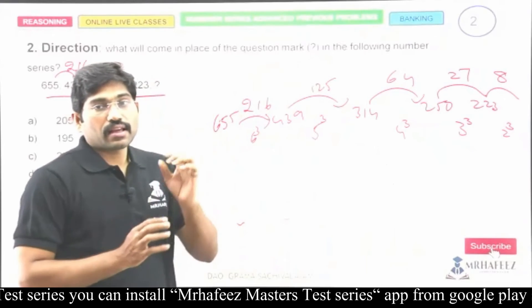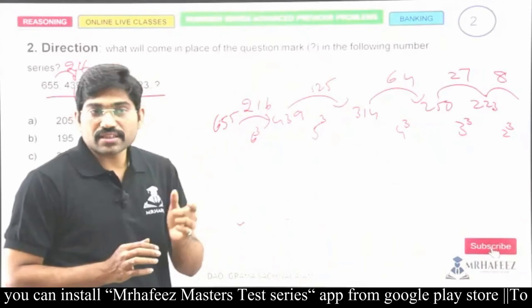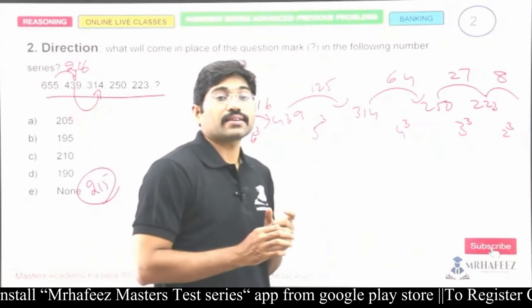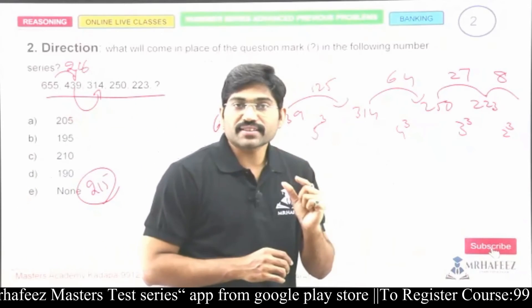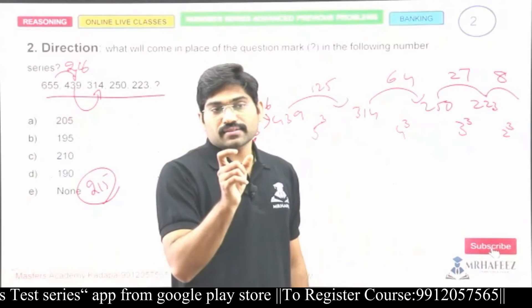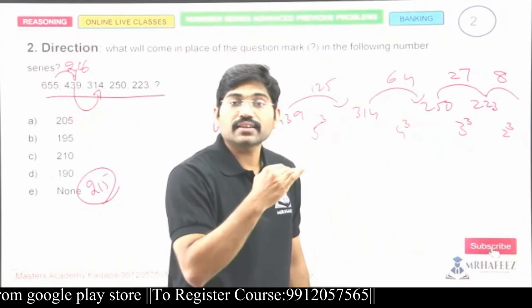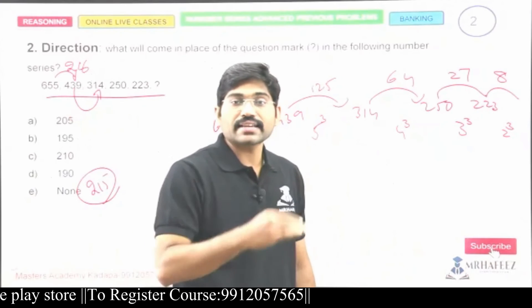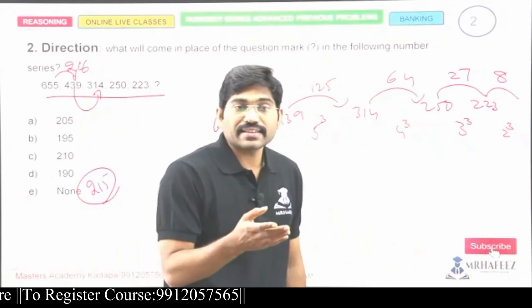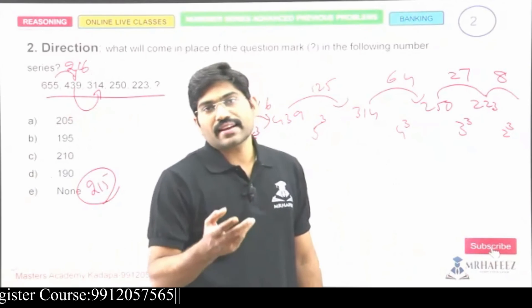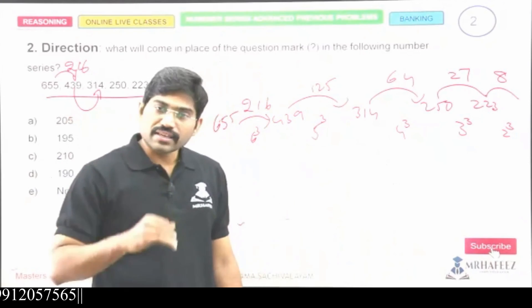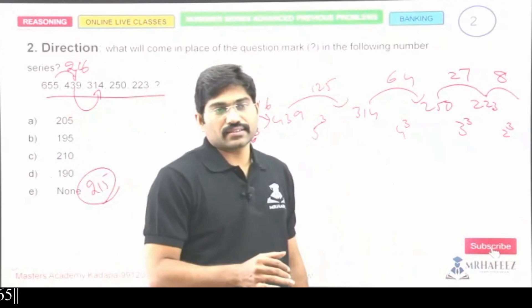Observe the numbers and how the logic works. Is it drastically increasing? Is it abruptly increasing? Is it slowly, normally increasing? If it's normally increasing, then definitely it's a subtracting series. If it's decreasing generally, it's a subtracting series.